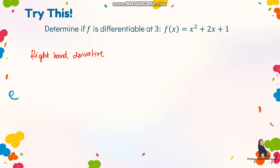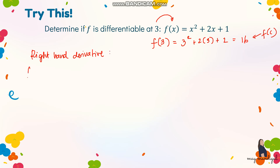Using the formula, the limit of f of x minus f of c all over x minus c, let's first solve for f of c. Substituting c equals 3: 3 squared plus 2 times 3 plus 1 equals 16. So f of c equals 16. Now for the right hand derivative, we get the limit of f of x minus f of c all over x minus c as x approaches 3 from the right.